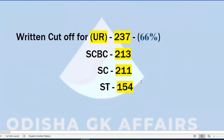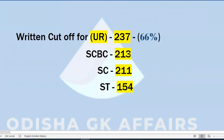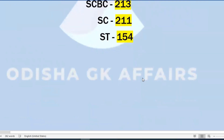So the 2019 cutoff for general category was 237, which is 66% of the total written marks of 360. For SC the cutoff was 213 — a 25-mark difference from general. For ST, the cutoff was 154.